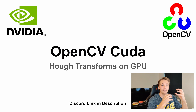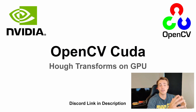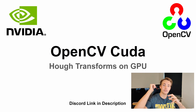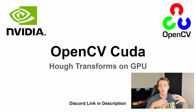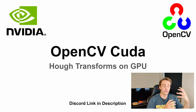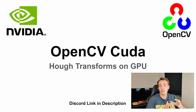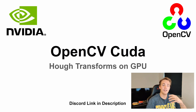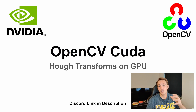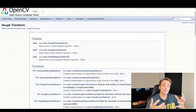In this video we're going to do Hough transformations on the GPU here in C++. But first of all, remember to join the Discord server — I'll link it in the description. You can chat with us about computer vision, deep learning, and artificial intelligence. You can also become a member of the channel if you want to support it, and everything will go toward creating more and better quality content.